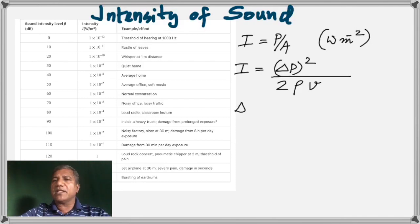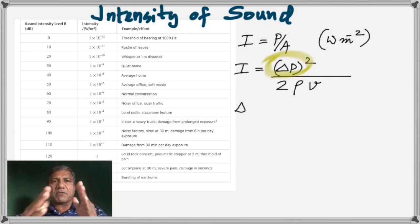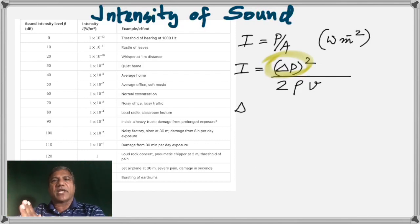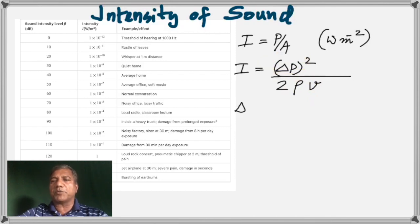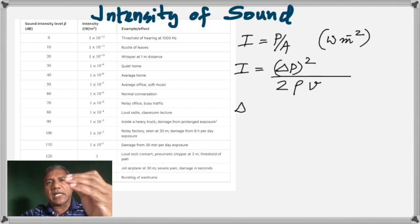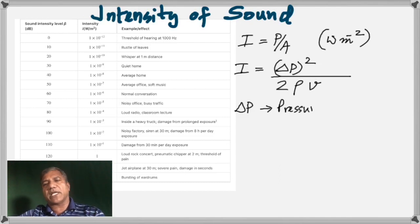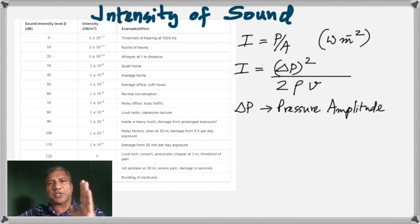Here is the formula in terms of pressure. Delta P is the pressure maximum in the compression — the maximum pressure at the center of a compression. Rho is the density of the material through which sound passes, and you also have the velocity of sound. To calculate the intensity in watts per meter squared, you need the pressure at the center of the compression, the density, and the velocity of the wave. Delta P is the pressure amplitude — the pressure at the center of the compression — and rho is the density of the material.